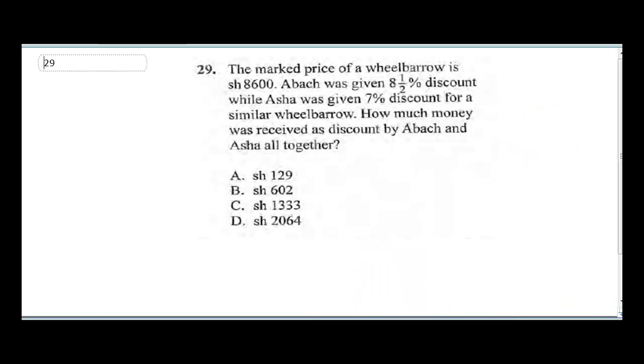Question 29 says the marked price of a wheelbarrow is 8600 shillings. Abach was given 8.5% discount while Asha was given 7% discount for a similar wheelbarrow. How much money was received as discount by Abach and Asha all together? We've talked about discount before - it's the amount given to reduce what you spend on a good. The total discount given was 8.5% plus 7%, and that gave us a total of 15.5% discount.